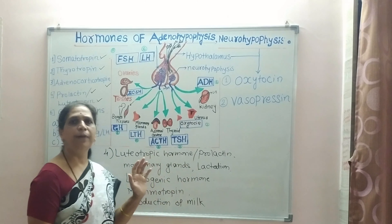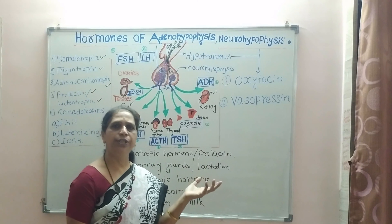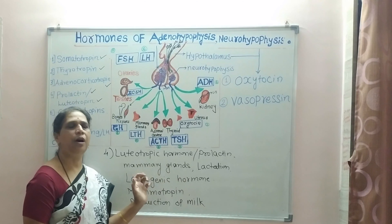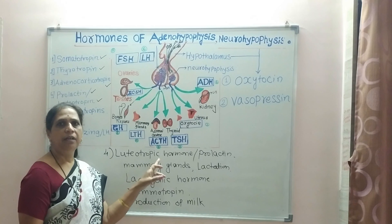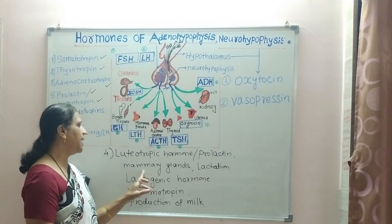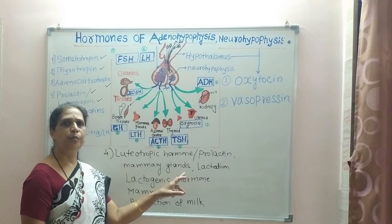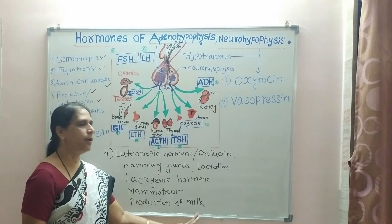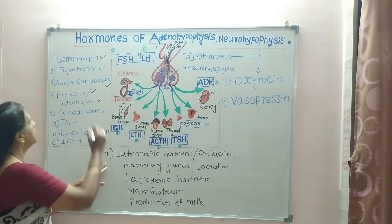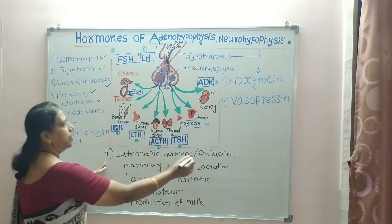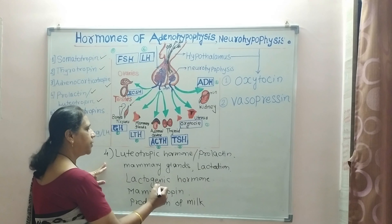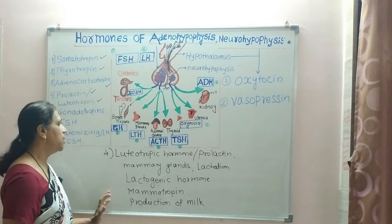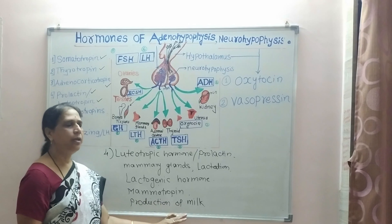Remember: production of milk takes place due to stimulation by prolactin, while ejection of milk takes place due to oxytocin — do not confuse these two hormones. Prolactin stimulates the mammary glands and helps in production of milk. Its names — prolactin, luteotropin, lactogenic hormone, mammotropic hormone — all reflect its functions.